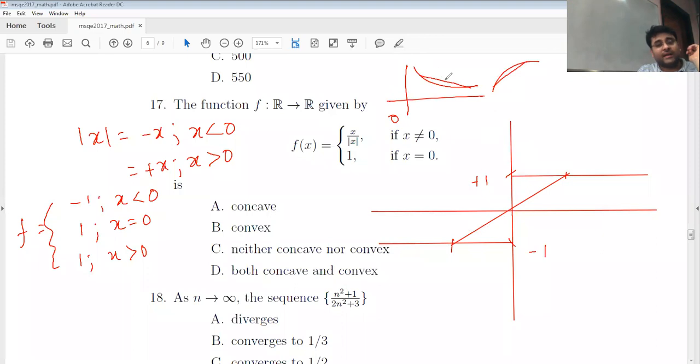Sorry, the line has to be above the curve for convex, and the curve has to be above the line for concave. That is the graphical approach. So here it is above the line in one part and below the line in another part, so neither. That's the answer.